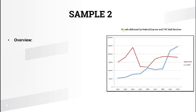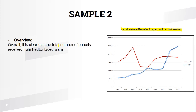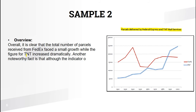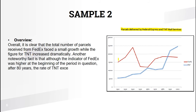Now let's move on to the second graph — parcels delivered by FedEx and TNT mail services. Here's the sample overview: 'Overall, it is clear that the total number of parcels received from FedEx faces a small growth, while the figure for TNT increased dramatically.' Even though both trends are upward, there can be a contrast — here TNT shows huge growth while FedEx shows only a small increase.